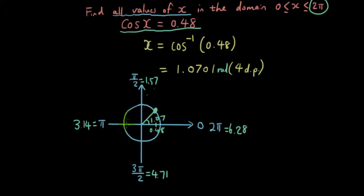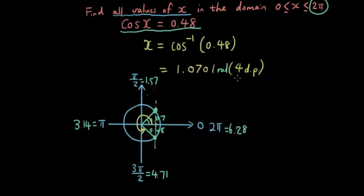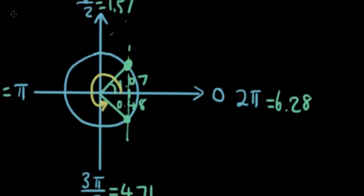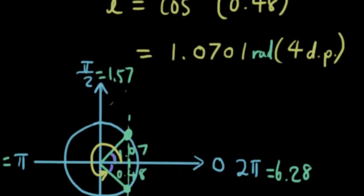So let's go around the circumference — there is another point here that has the same x-coordinate of 0.48. Now the question is: what is this angle? What is the angle from the positive x-axis all the way around to this line? Now if this little angle inside this triangle is the same as theta — which is 1.07 — then we can use symmetry to find the second angle.